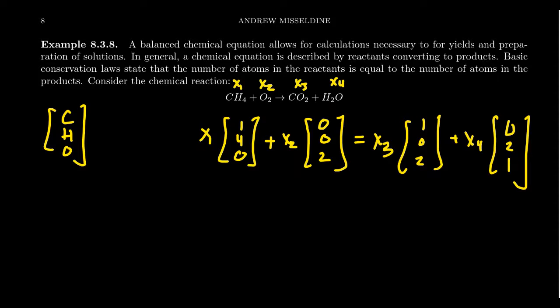And then translating this vector equation into a system of equations, you get something like the following. You're going to get X1 plus, well, 0X2, so I just leave it blank. Then on the right-hand side, just looking at the carbon, you're going to get X3 and then no X4. So that's why I said earlier, all of the carbon from the methane is going to end up with the carbon dioxide.